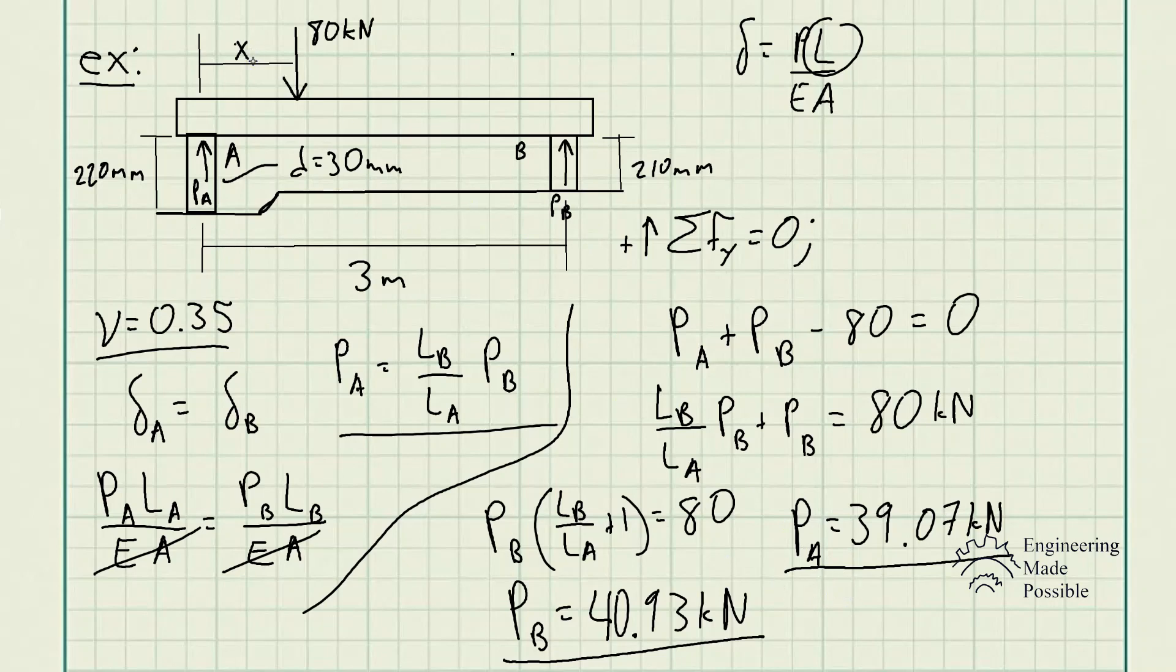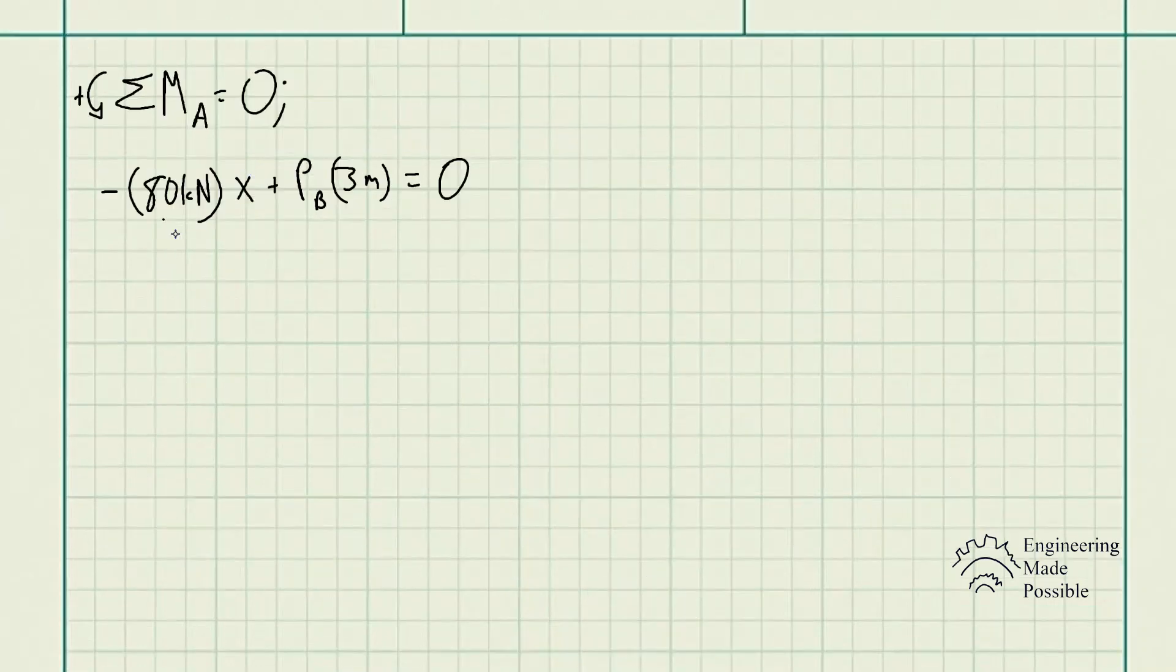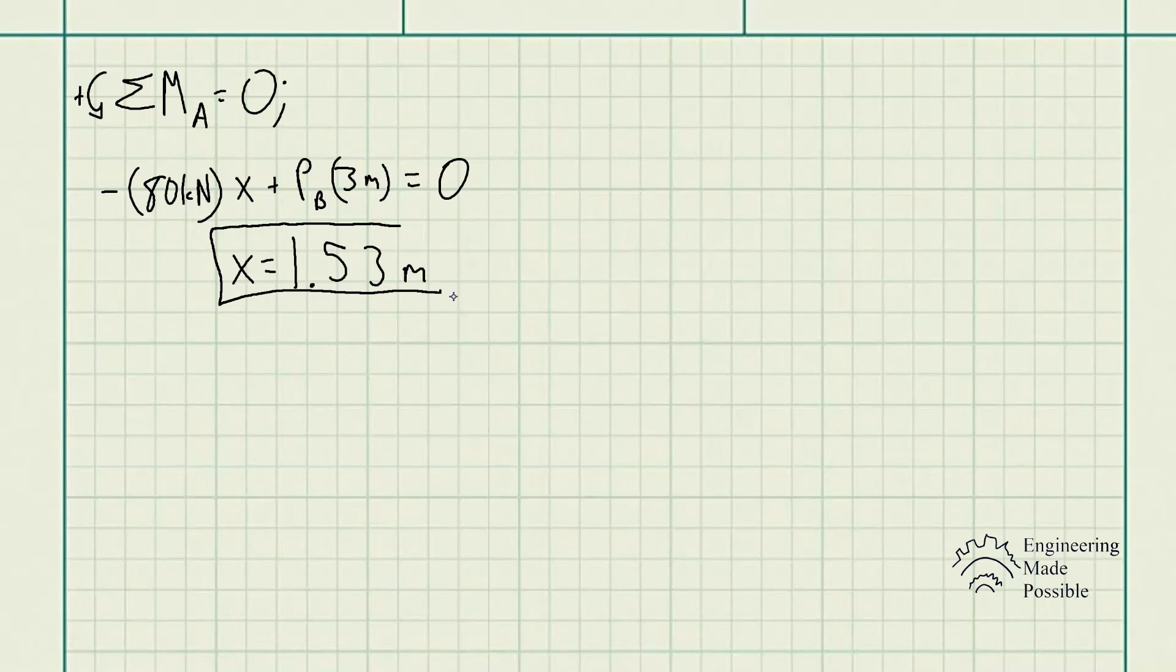Now to solve for X, we do the sum of moments, with respect to A. We get negative 80 kilonewtons times this variable X, plus PB times the 3 meters, which is the perpendicular length, which causes this moment, equal to zero. Since we previously solved for PB, we can solve for X.